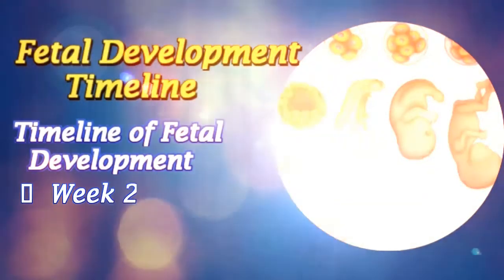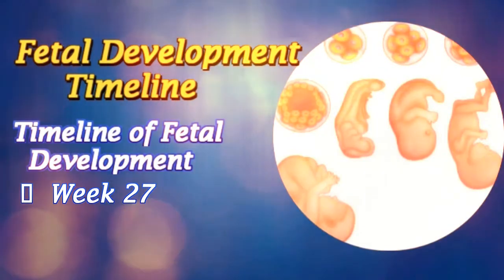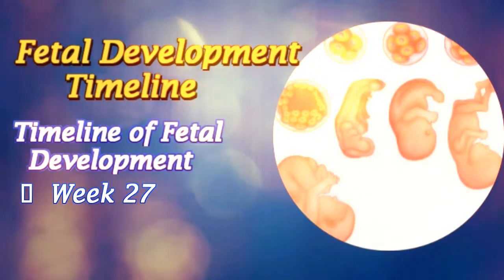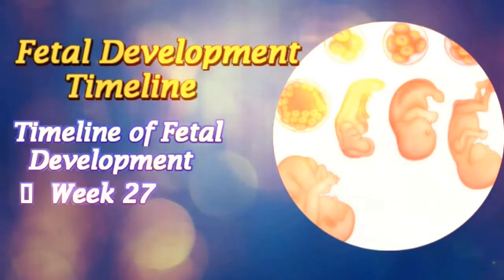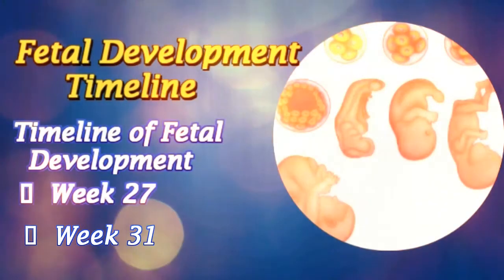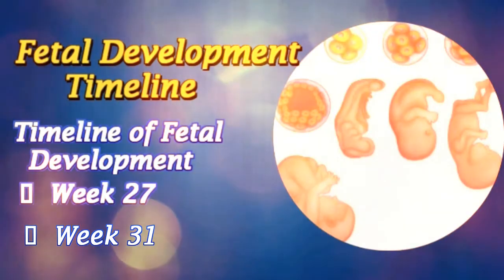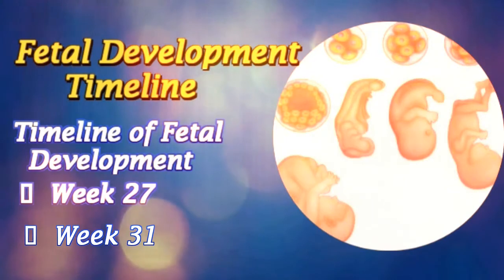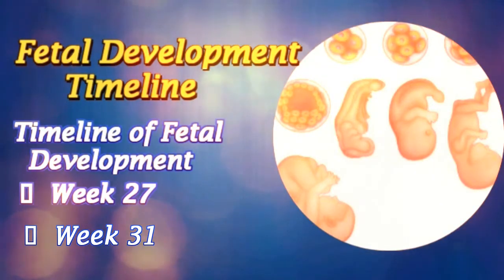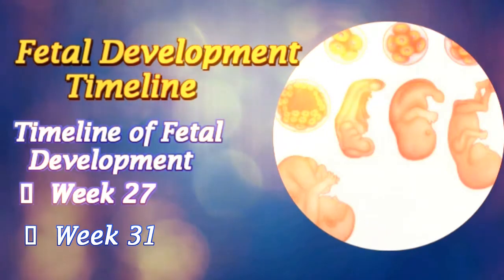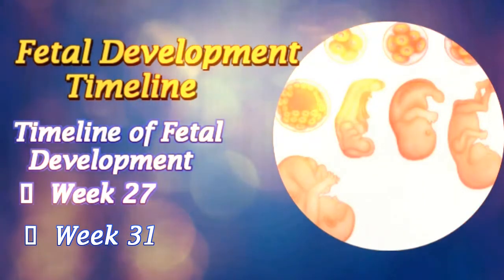Week 27: The fetus reaches a length of 38 cm. The brain develops rapidly and the eyelids can open and close. Week 31: The length of the fetus is around 38 cm. The amount of body fat starts increasing rapidly and rhythmic breathing movements are seen. Bones are fully developed and the fetus begins to store iron, calcium, and phosphorus.